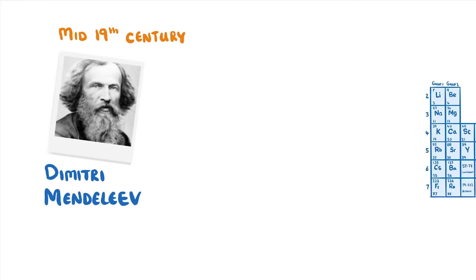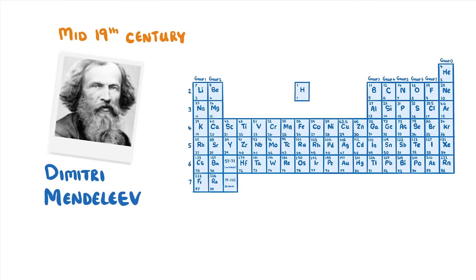Dmitry Mendeleev was a Russian chemist and inventor, and back in the mid-19th century he devised the periodic table, which organized all of the known elements.